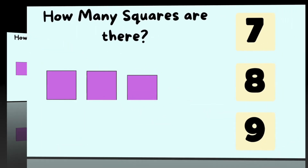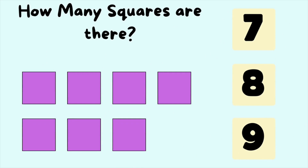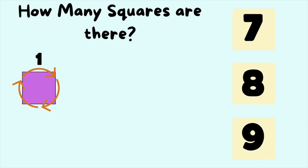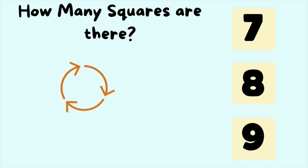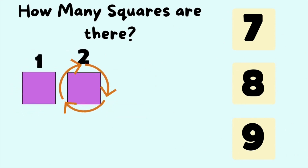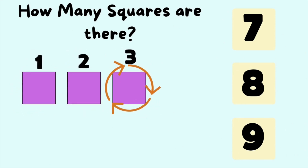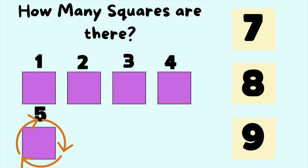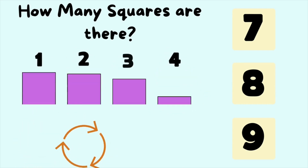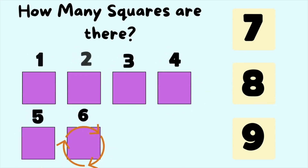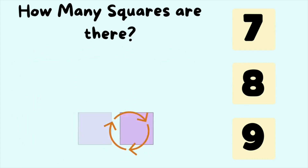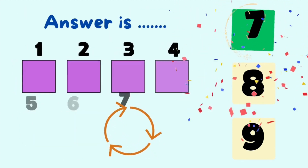How many squares are there? Let's count the number of squares. It is one, two, three, four, five, six, seven squares. So the answer is seven squares.